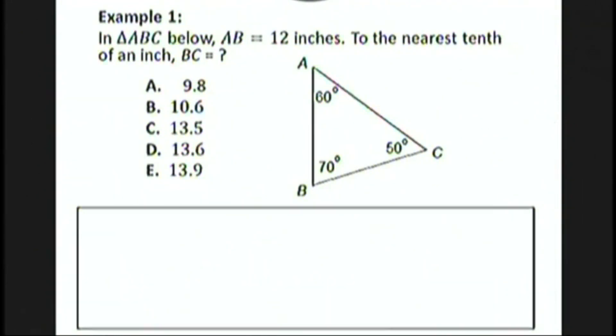Let's look at an example. In triangle ABC below, AB equals 12 inches. Let me label that. To the nearest tenth of an inch, BC is equal to what? Let's call that x.